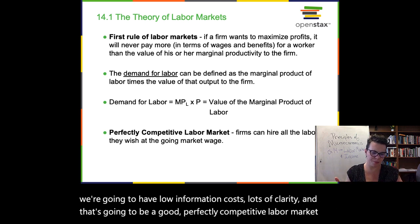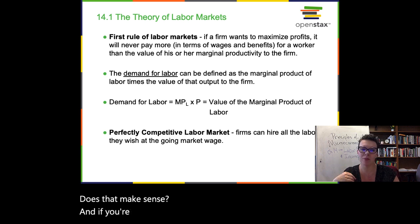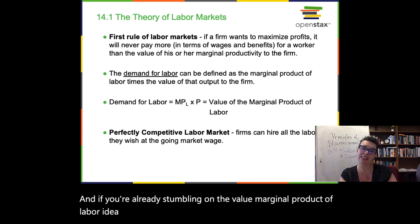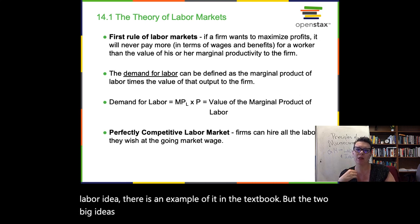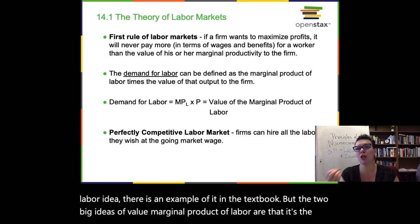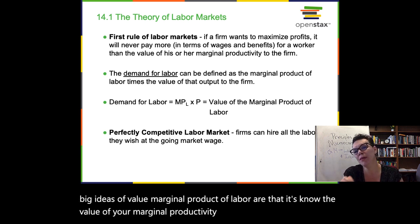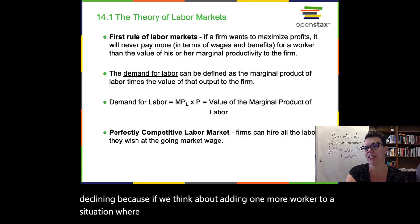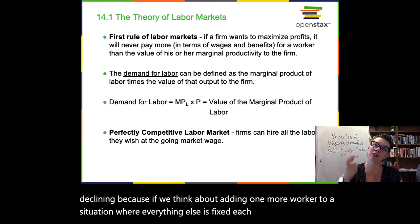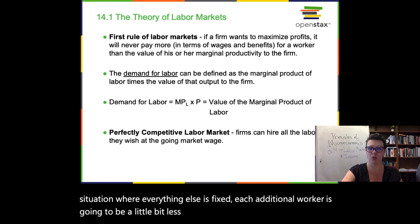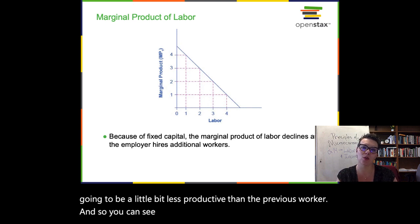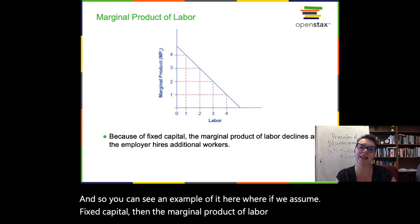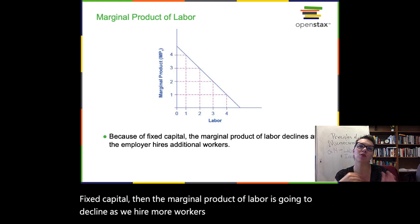If you're already stumbling on the value marginal product of labor idea, there is an example in the textbook. The two big ideas of VMPL are that it's the value of your marginal productivity and that it's going to be declining. If we think about adding one more worker to a situation where everything else is fixed, each additional worker is going to be a little bit less productive than the previous worker. If we assume fixed capital, the marginal product of labor is going to decline as we hire more workers.